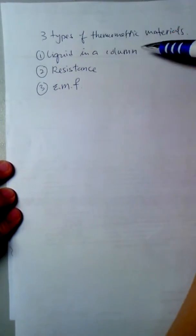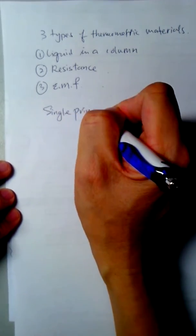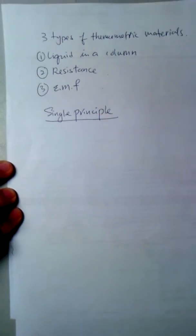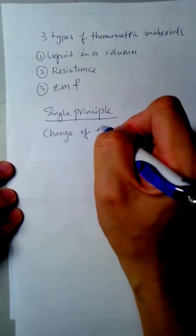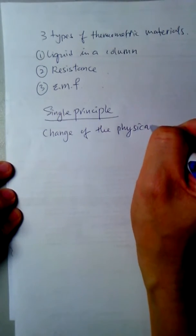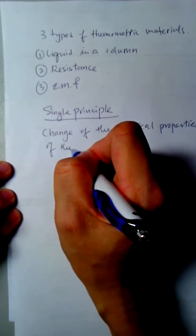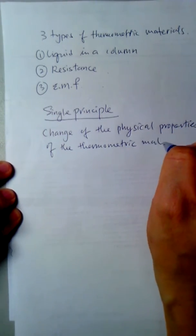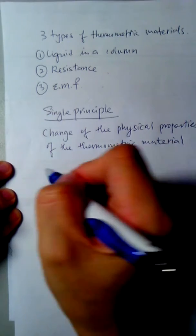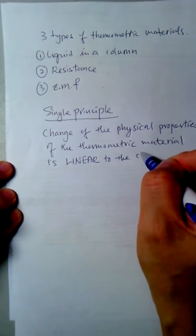In using these three types of thermometric materials, there's one single principle. The single principle is that the change of the physical properties of the thermometric material is linear to the change in temperature.